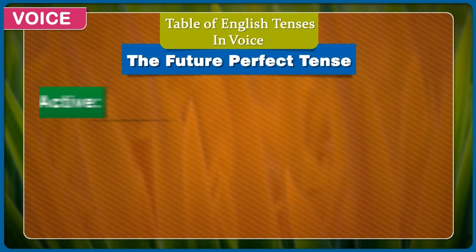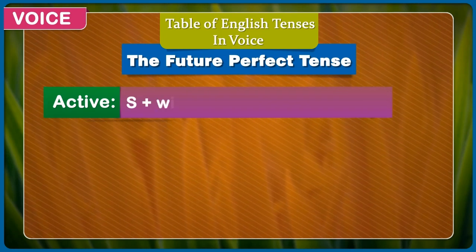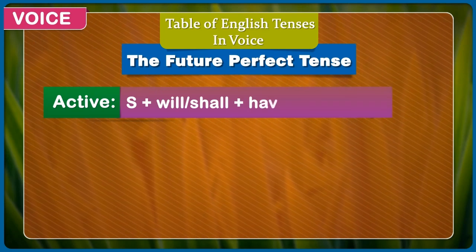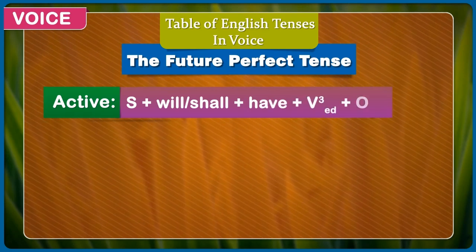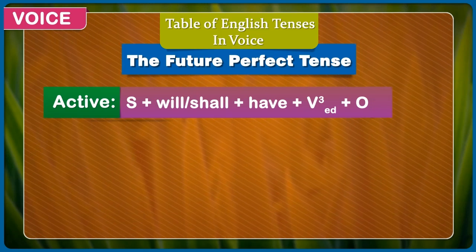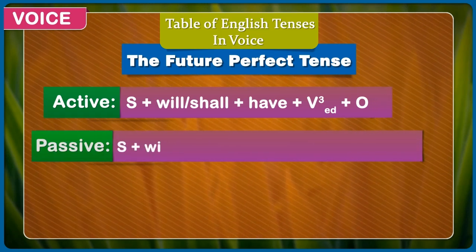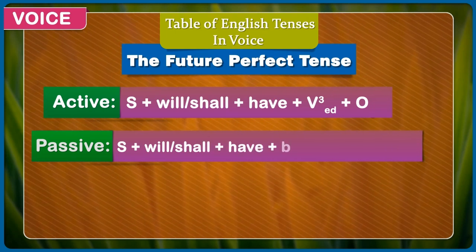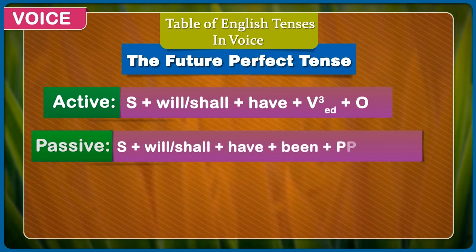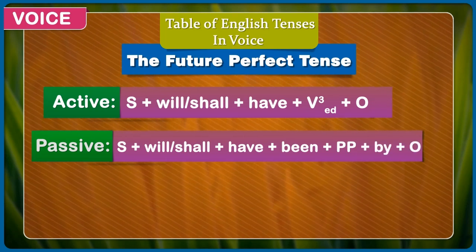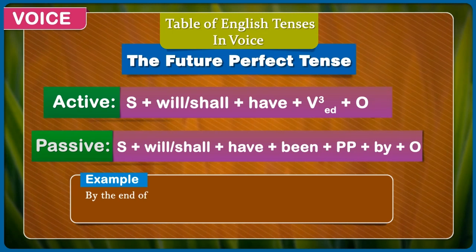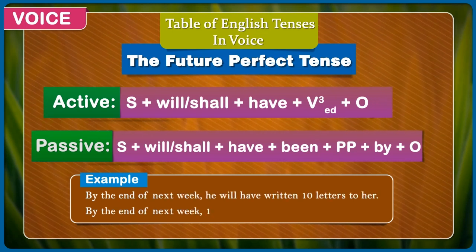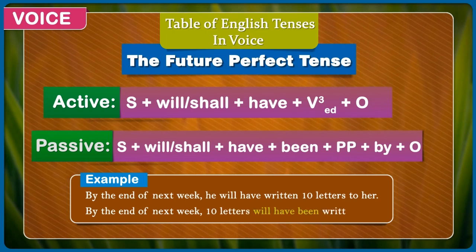The future perfect tense. Active: subject + will/shall + have + third form of verb (-ed) + object. Passive: subject + will/shall + have + been + past participle + by + object. Example: By the end of the next week, he will have written 10 letters to her. By the end of the next week, 10 letters will have been written to her.